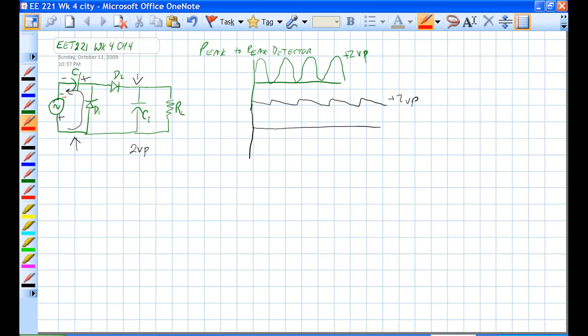When this is positive and this is negative, on the next cycle, we have this being raised to 2V peak over this. We end up with 2V peak right here.